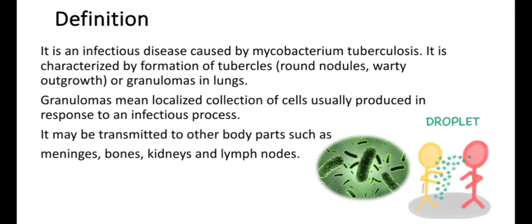Definition: pulmonary tuberculosis is an infectious disease caused by Mycobacterium tuberculosis. It is basically a contagious disease, meaning it spreads from the infected person to someone else. You can get TB by breathing in the air droplets from the cough or sneezing of an infected person.